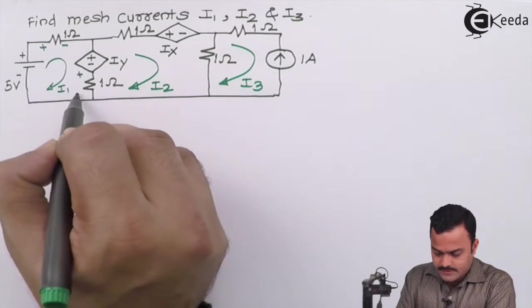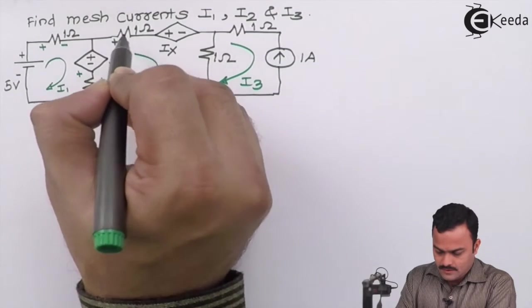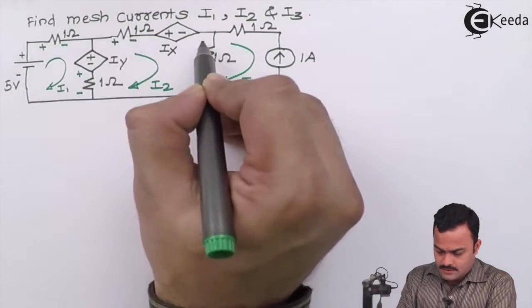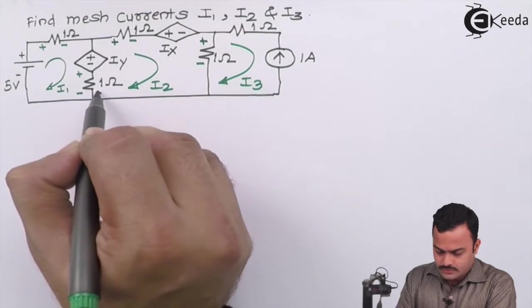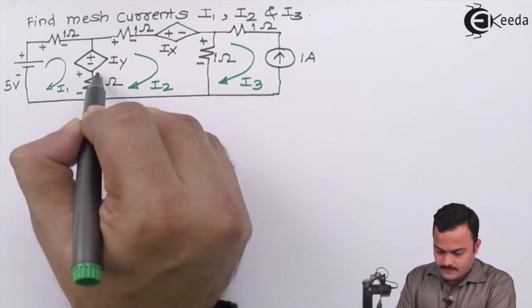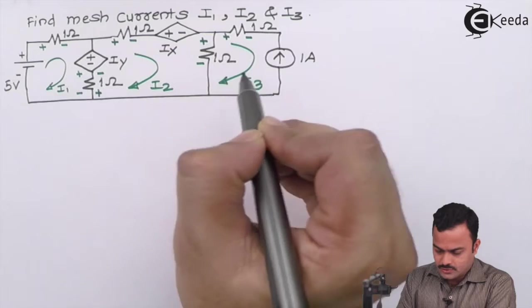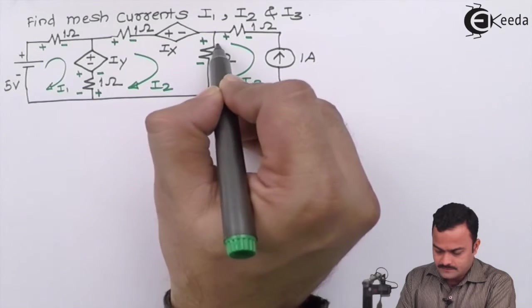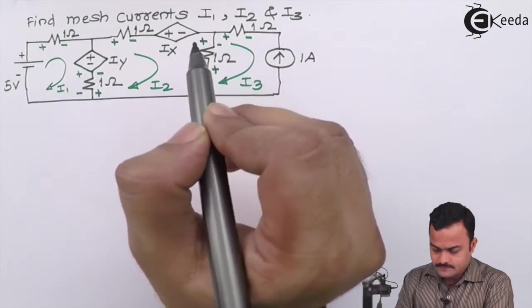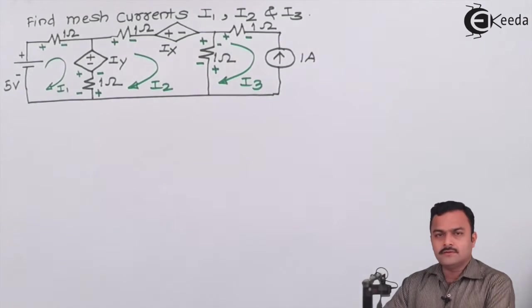Based on the current flowing, we will have the voltage drop across each resistor in this manner. This drop is because of i1, these drops are because of i2 in mesh 2, and for i3 we are having two voltage drops in this manner. Let's apply KVL to mesh 1.